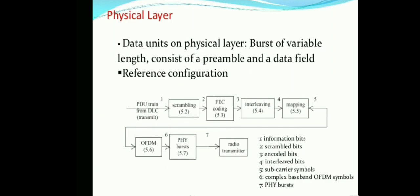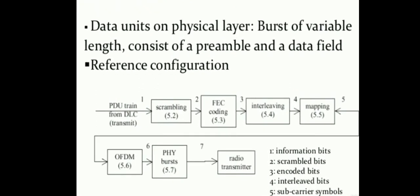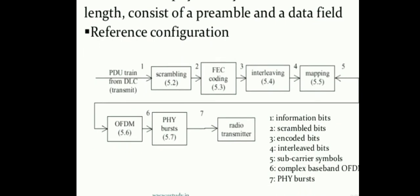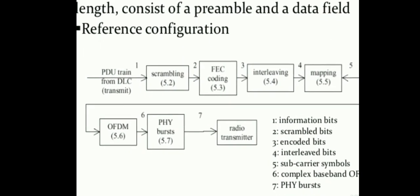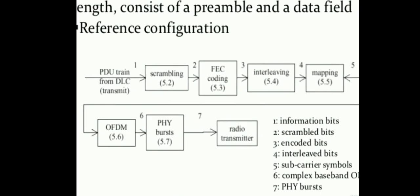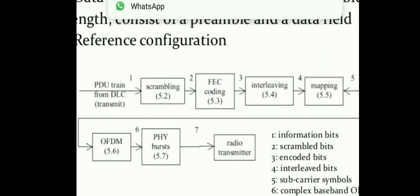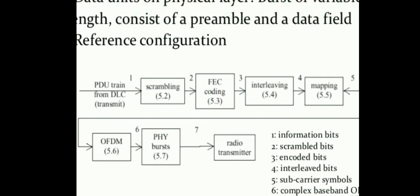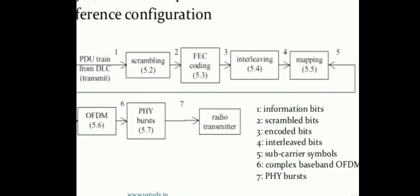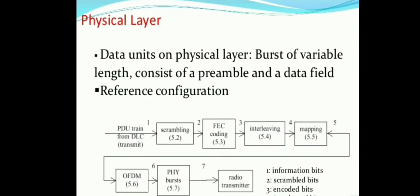In the physical layer pipeline, the data (physical data unit) undergoes scrambling, then Forward Error Correction (FEC) coding, followed by interleaving and data mapping. The mapped data is passed to the OFDM block — OFDM stands for Orthogonal Frequency Division Multiplexing — which multiplexes the data for transmission. The data is then divided into physical bursts and transmitted via the radio transmitter to the receiver.